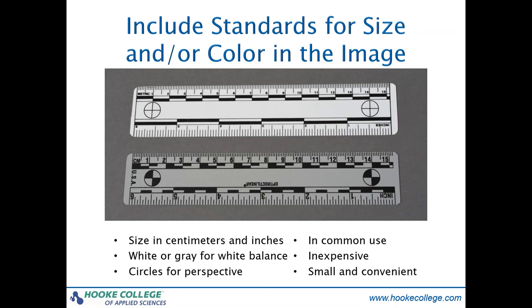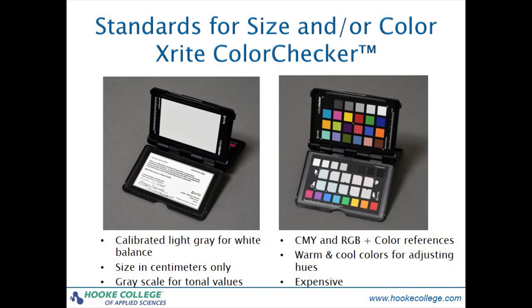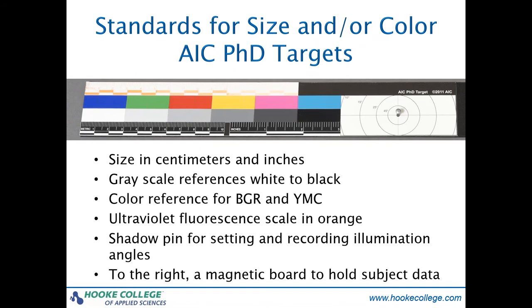These short, inexpensive rulers actually provide a lot of useful information and are widely used in medical, forensic, and industrial applications. They provide rulers in both centimeters and inches, a neutral white or gray for color balance and density, and cross circles for photogrammetric use. In recent years, the X-Rite color checker has found a home in my camera bag. While not as compact, it includes a huge amount of information. In addition to a scale in centimeters, it includes a six-swatch grayscale for tonal values, and CMY and RGB and other color references. The calibrated light gray field is perfect for custom white balancing in the field.